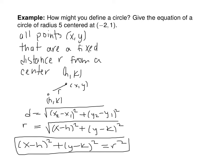An equation for a circle of radius 5 centered at (−2, 1) is given by (x plus 2)² plus (y minus 1)² equals 5 squared, or 25.